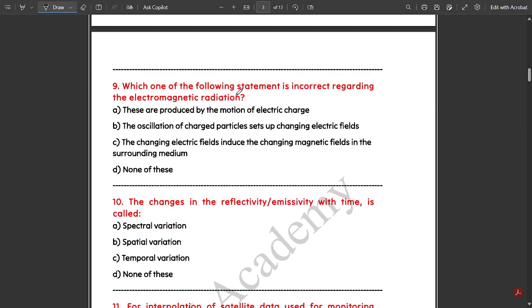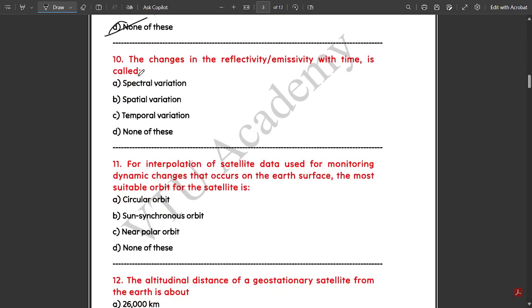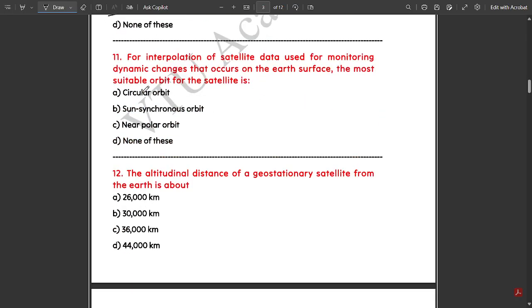Which statement is incorrect regarding electromagnetic radiation? None of the above—all statements mentioned here are correct. The changes in reflectivity and emissivity with time is called temporal variation. For interpolation of satellite data used for monitoring dynamic changes on earth's surface, the most suitable orbit for the satellite is sun synchronous orbit.